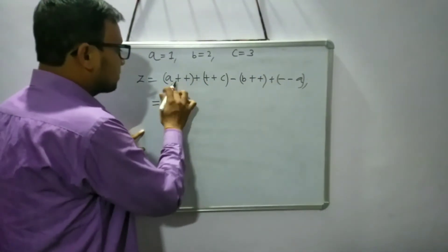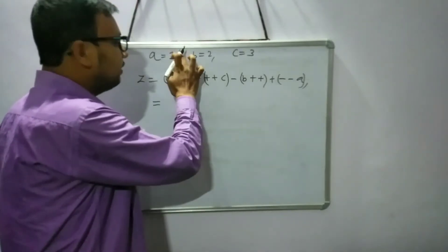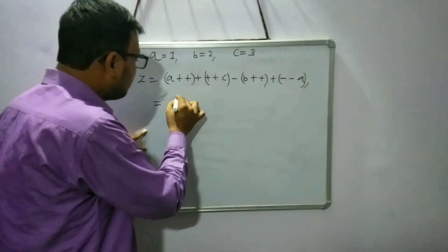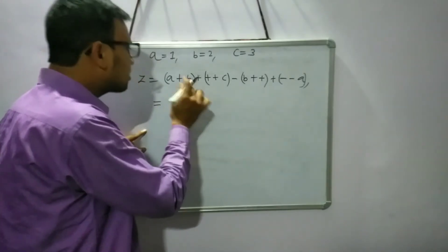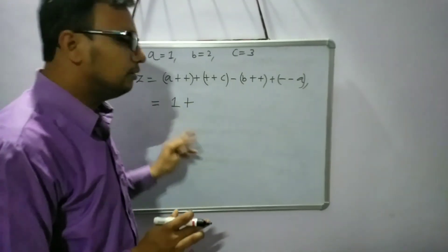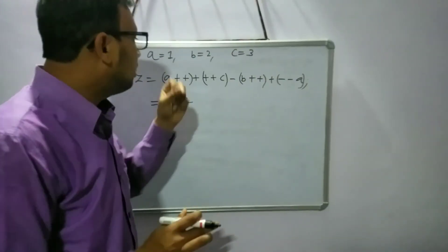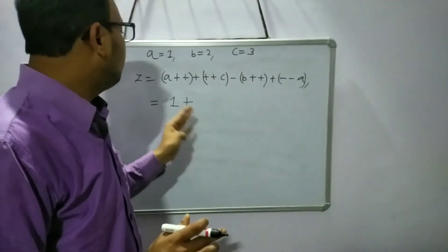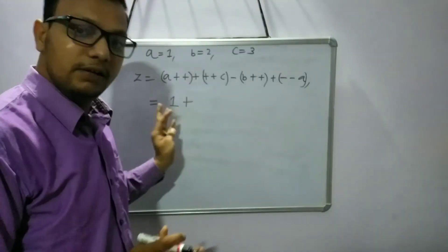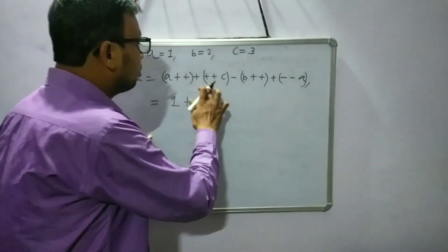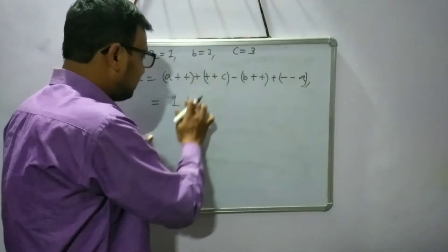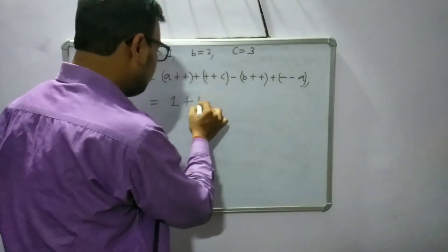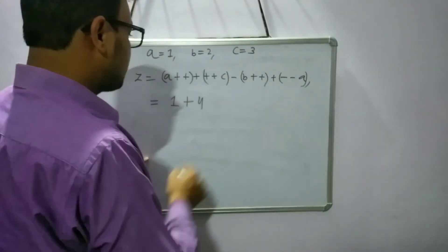Now, 'a++' — what is the current value of a? The current value of a is 1, so we will write 1 here. But just after writing the value 1, we keep in mind that the updated value of a is now 2. Now let's go forward — the arithmetic plus, then '++c' means prefix, so we write 4. '++c' evaluates to 4.